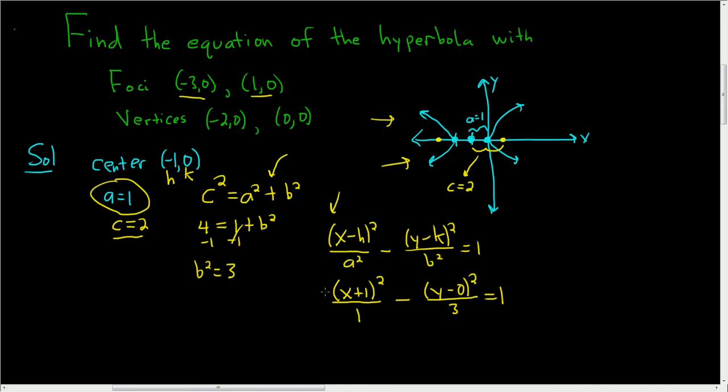I guess we could clean it up a bit. So maybe write the final answer as (x + 1)² minus y² over 3 equals 1. And that's it.